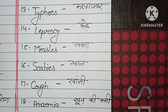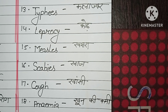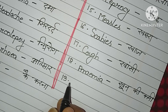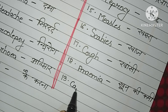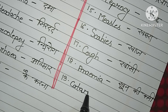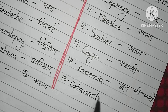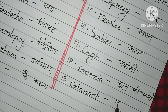Number nineteen: cataract. C-A-T-A-R-A-C-T. Mutia Bind.